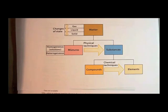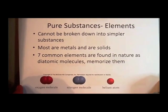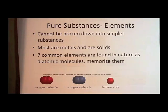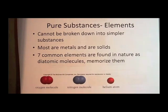The pure substances box was separated into compounds and elements. The definition of an element is a substance that cannot be broken down into simpler substances. Fundamentally, it's all the same type of atom, and chemically you cannot break it down further. As it turns out, most elements that exist in nature are metals, and most elements are found as solids. Most elements, as they exist in nature, can exist stably as single atoms.